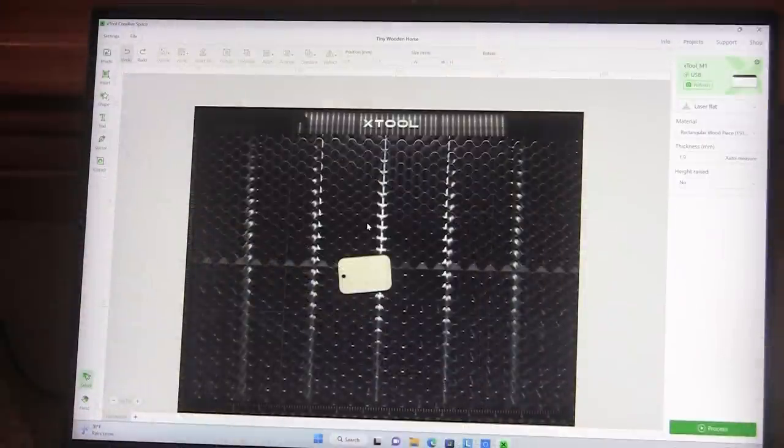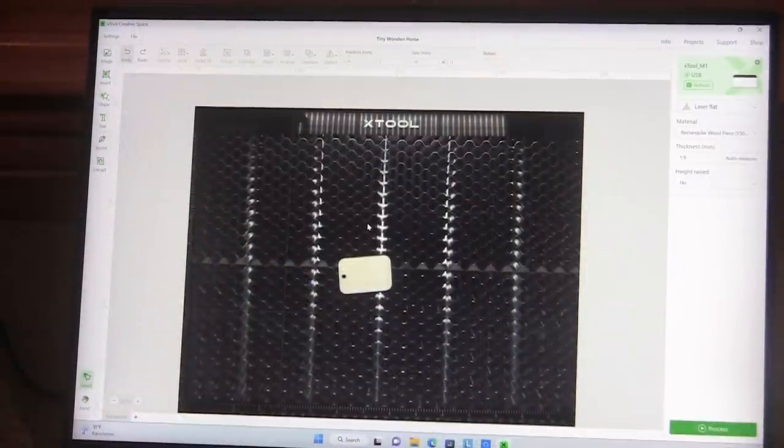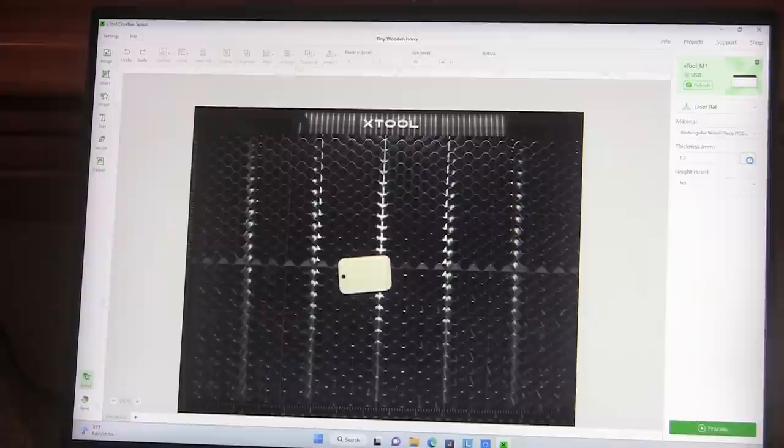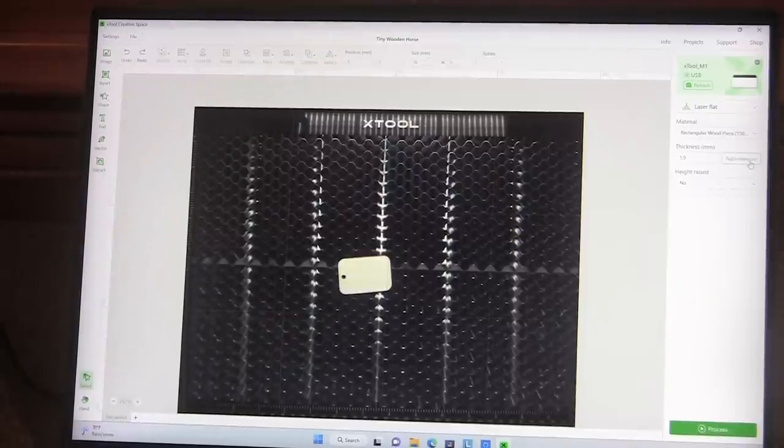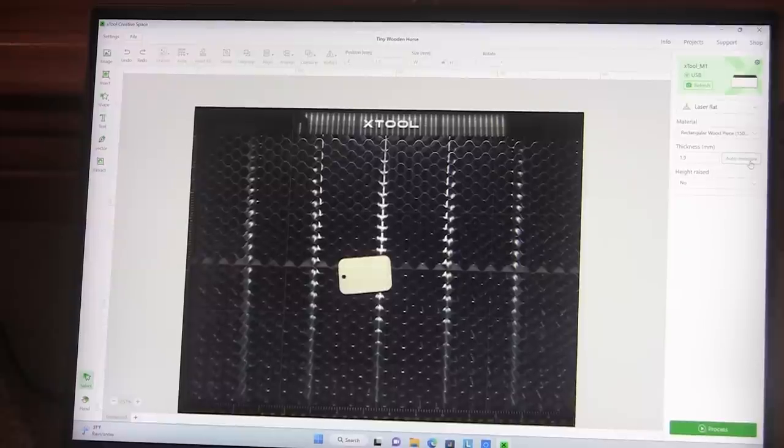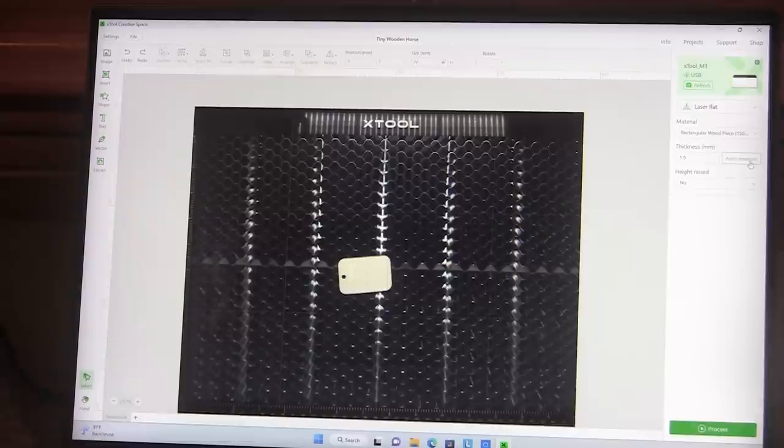Now I've put this little gift tag inside and I want to auto measure it. And it's measuring. And it says it's successful and that it's 1.9 millimeters thick. So now I figure these are gift tags because they come with a little string in the package. And there's a whole bunch of them. So they must be gift tags. So I'm going to make some Christmas gift tags.